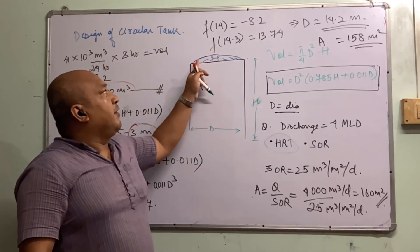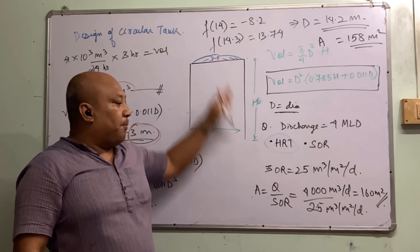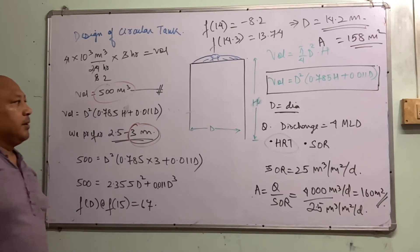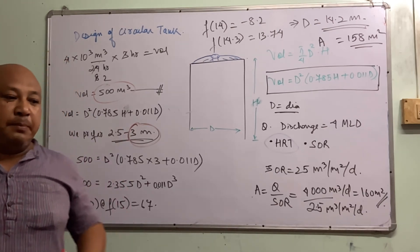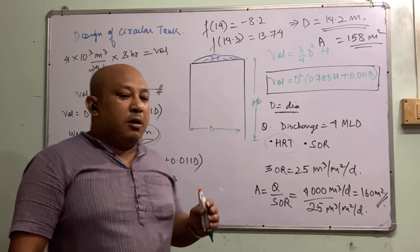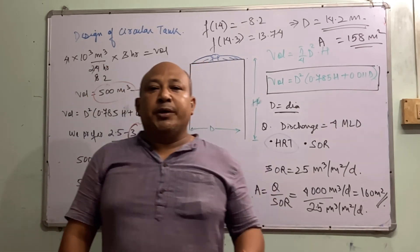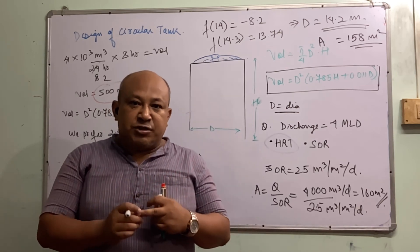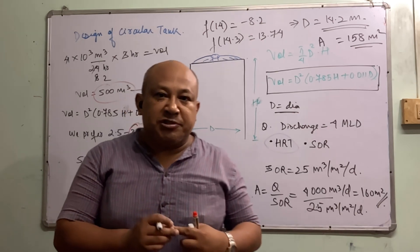So with this, I will be ending the design of sedimentation tanks — both Type 1 and Type 2 — using two operational parameters: either settling velocity, SOR, or hydraulic retention time.